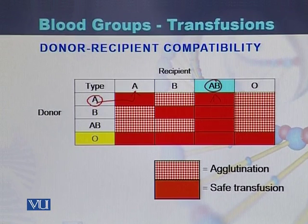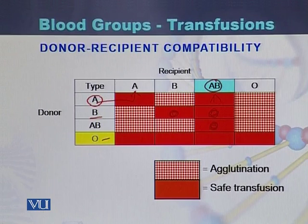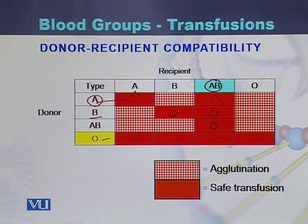Blood group type B can be donated to blood group B as well as to a person with blood group AB. In the case of AB, it can only be donated to an individual who also has blood group AB. Blood group O can be donated to all individuals — those with blood group A, B, AB, or O. So we can conclude that blood group O is the universal donor.